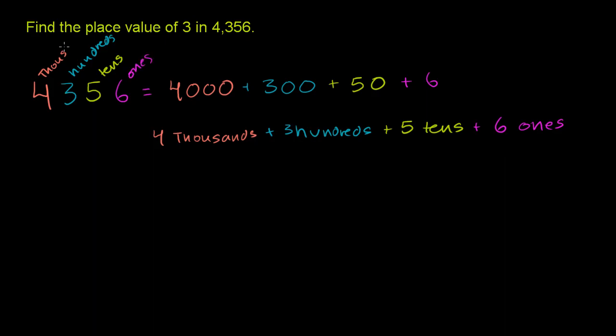So when they ask what is the place value of 3 in 4,356, we're concerned with this 3 right here. Its place value is in the hundreds place. If there was a 4 here, that would mean 400; if there's a 5, 500. It's the third from the right.